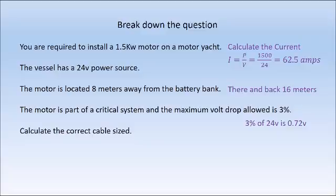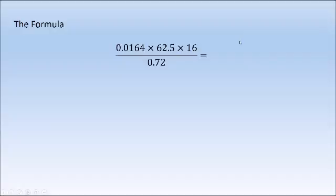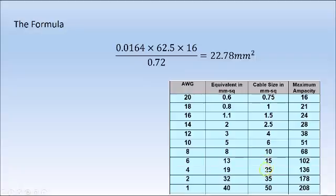Now we need to take that information and calculate the correct cable size. We input our data into the formula: 0.0164 times our current (62.5) times 16 meters (the length of our circuit), all divided by our maximum allowed volt drop. 3% of 24 volts is 0.72. That gives you a value of 22.78 millimeters squared — that's the smallest cable you could install to maintain that 3% volt drop. Cable manufacturers don't make odd sizes like this, so you round up to the next size. Looking at our cable chart, 25 millimeters squared is the next size up — that would be our cable size to maintain the 3% volt drop in this scenario.